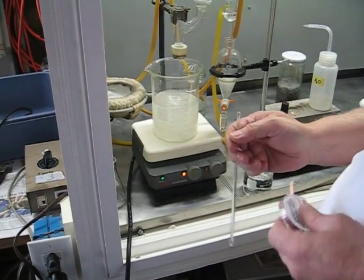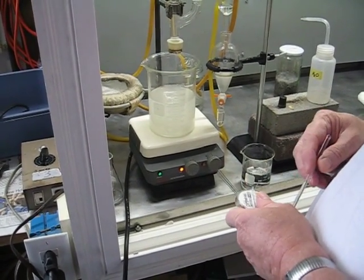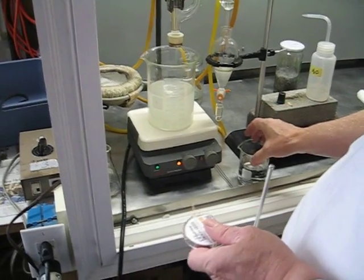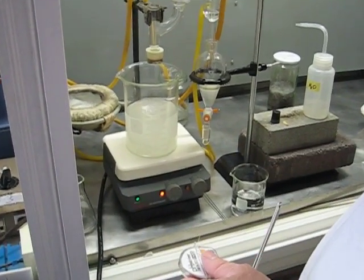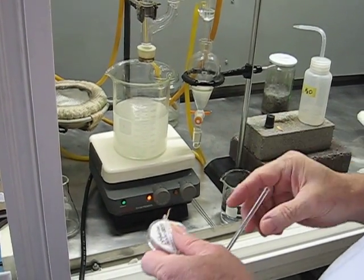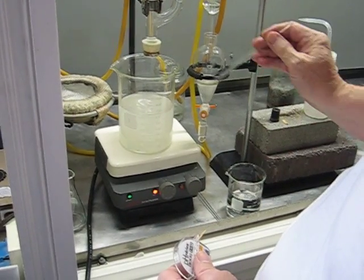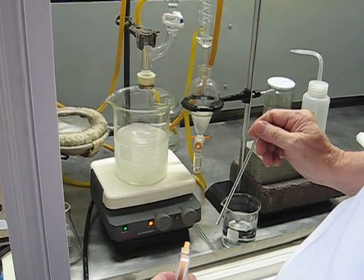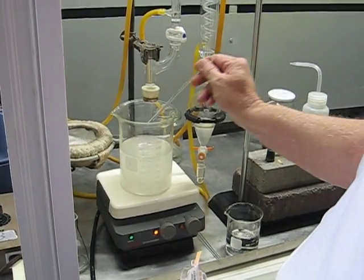Go ahead. This is going to be a movie of the precipitation of sebacic acid out of a solution, an aqueous solution at pH 6. I'm going to take it down to pH 2.